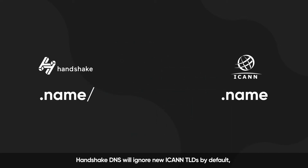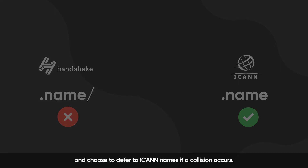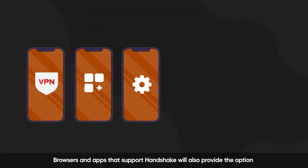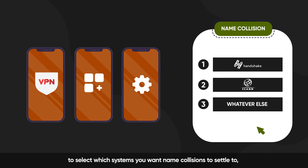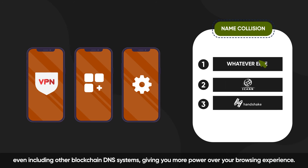Handshake DNS will ignore new ICANN TLDs by default, but you can always use an alternative version of Handshake DNS and choose to defer to ICANN names if a collision occurs. Browsers and apps that support Handshake will also provide the option to select which systems you want name collisions to settle to, even including other blockchain DNS systems, giving you more power over your browsing experience.